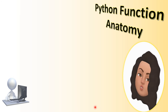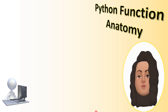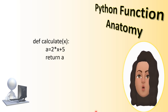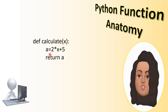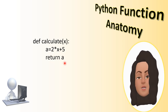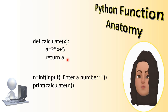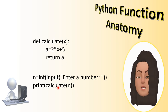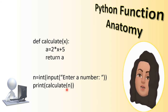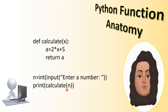Now let's look at Python function anatomy - the different parts of a function. Here is a small function: 'def calculate(x)'. The name of the function is 'calculate', the parameter is 'x'. An expression is computed and stored in a variable, and there is a return statement returning a value. In the main program, we receive input from the user stored in a variable 'n', then call 'calculate(n)'. In Python, variables refer to the memory area where a particular value is stored.